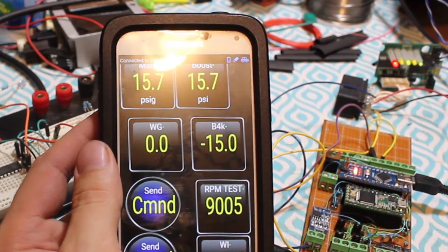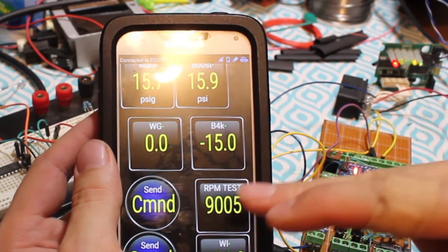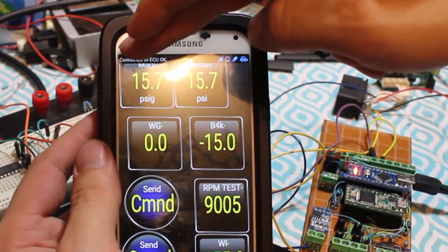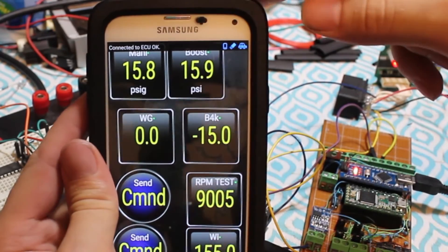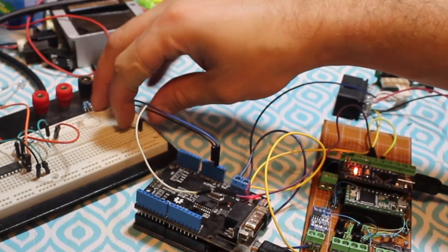Here in the Torque app on my phone, I'm reading the 9,000 RPM signal and 16 PSI of manifold pressure. Now let's tweak it a little bit and show it tracking.